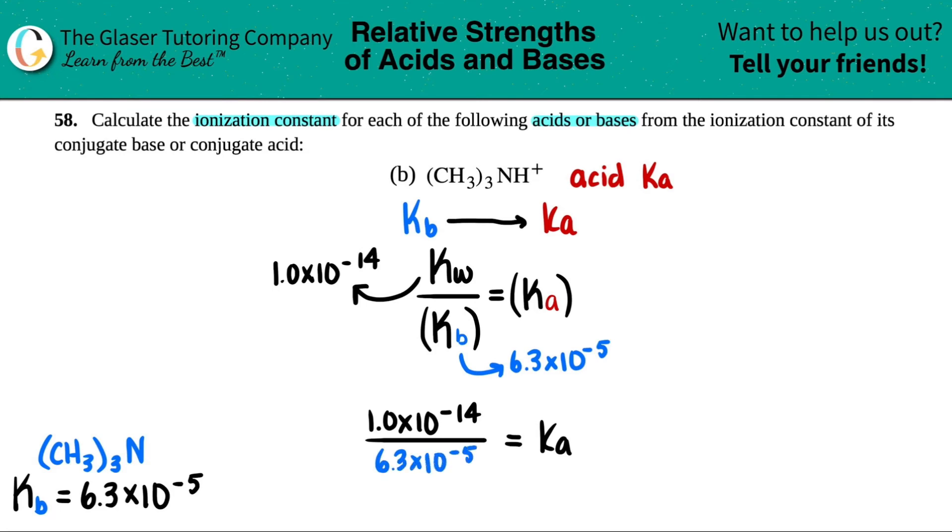So we have 1.0 times 10 to the negative 14th divided by 6.3 times 10 to the negative fifth equals Ka. Let's get it. 1 times 10 to the negative 14th divided by 6.3 times 10 to the negative 5th. And we get 1.6 if we're doing two sig figs, 1.6 times 10 to the negative 10th.